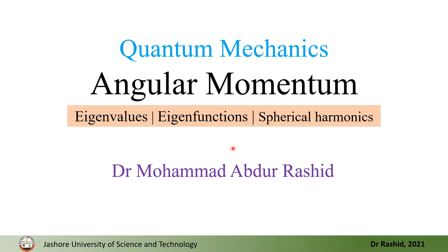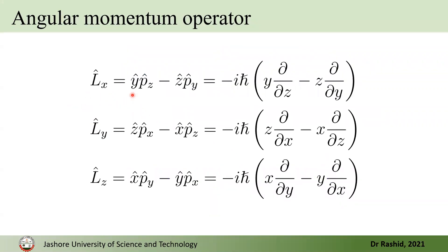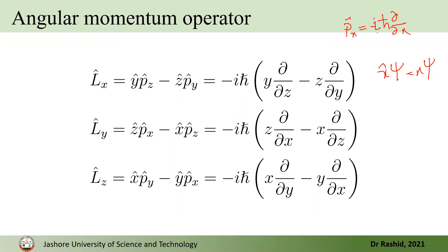We define the angular momentum operators like this: the x component of the angular momentum operator is equal to y-hat p_z minus z p_y. The position operators act by multiplying the function by the coordinate, and the momentum operator p_x equals minus iħ d/dx. Replacing these with differential operators, we have expressions for all three components in terms of differential operators.